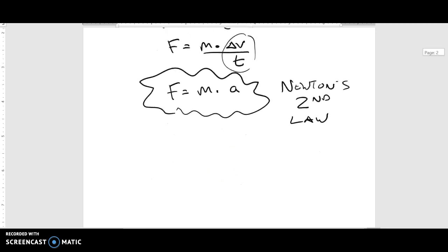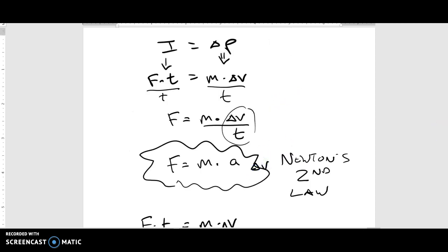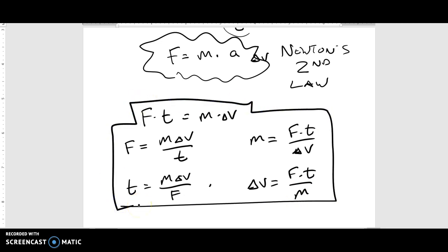We'll talk about the units as we go as we solve problems. So, going back to the big one, we have F·t equals mass times delta V. Let's rearrange it. You get force equals M delta V over T. Or you get T equals M delta V over F. Or you get M equals F times T over delta V. Or you get delta V equals F times T over M. Those are four big equations. If you need to pause and write those guys down, do so. Because we're going to use them to solve some problems.